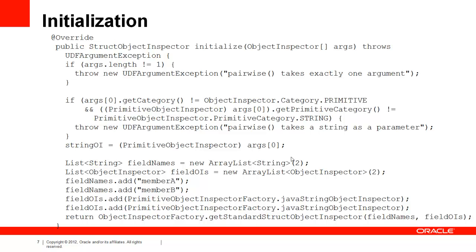Here you see the initialize method overwritten. My pairwise function takes in only one argument — a delimited string — so we check the length of the args array. The string OI object is an object inspector on the input, validating that it is a string. The remaining inspectors are for the strings which will make up the output.